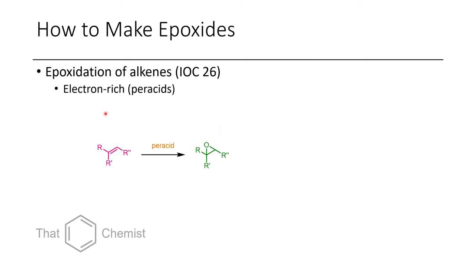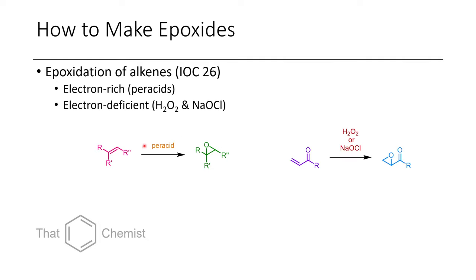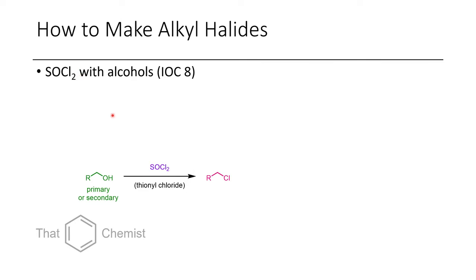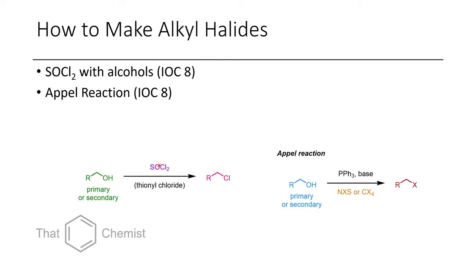To make epoxides using the methods we've discussed: in lecture 26, we talked about using peracids to epoxidize alkenes. Alternatively, you could use hydrogen peroxide or sodium hypochlorite on an alpha-beta-unsaturated carbonyl or other Michael acceptor. To make an alkyl halide, the methods we've covered include treatment of an alcohol with thionyl chloride, or the Appel reaction to make alkyl bromide, iodide, or chloride — note this doesn't work for fluoride; for that you'd use DAST or deoxofluor.